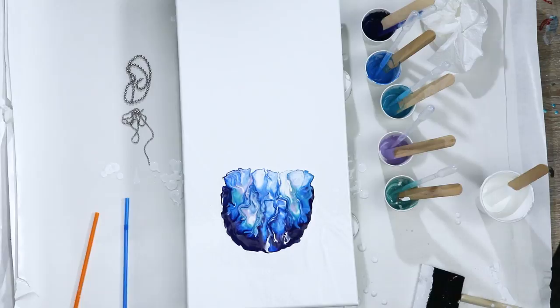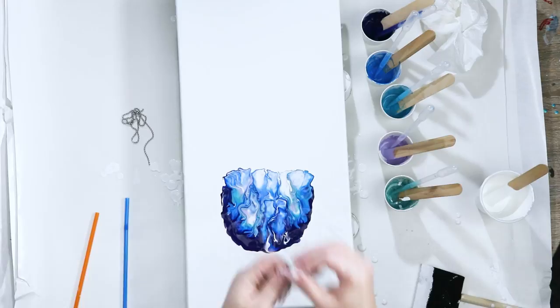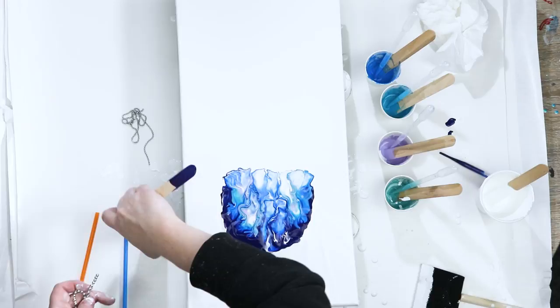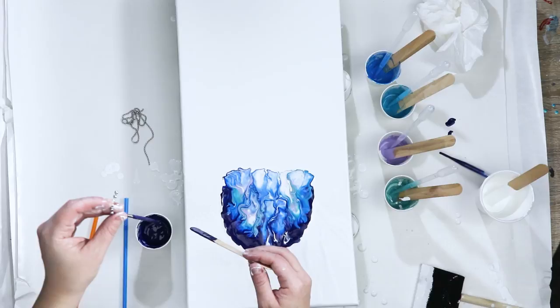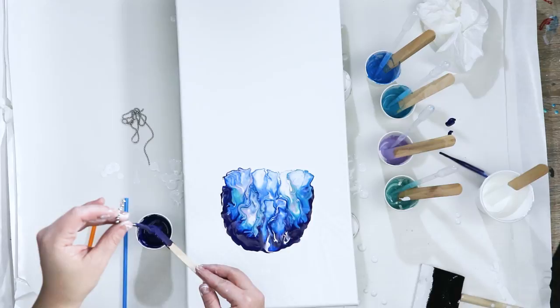So I'm going to get my larger chain and I'm just going to dip it in some of my colors. You can reuse your chains too. These are the ones that she used. I just rinsed them right off and they're good to go again. It's really easy when the paint is still wet to just rinse them right off.